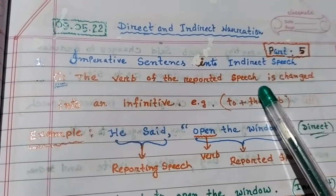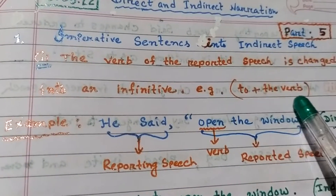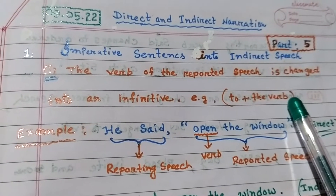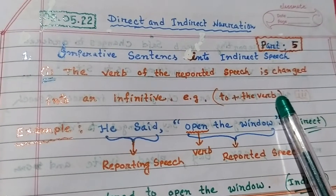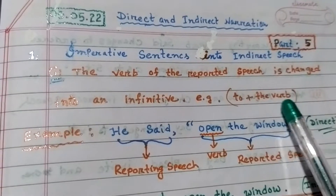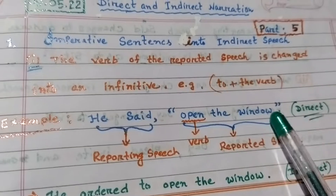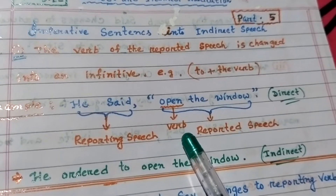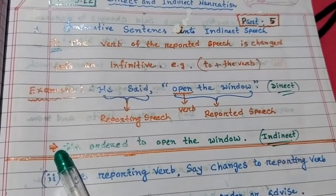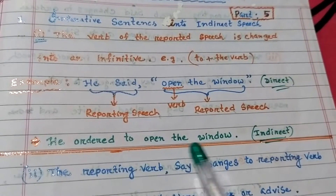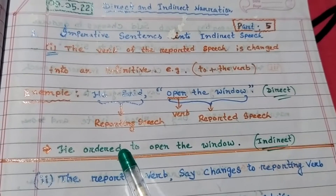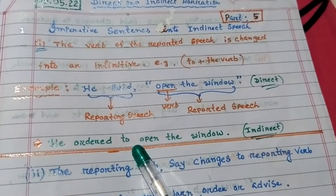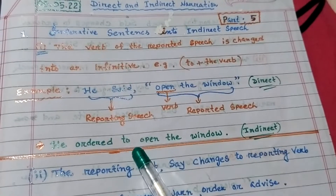Number one: the verb of the reported speech is changed into an infinitive, that is 'to' plus the verb. For example, in direct speech: 'He said, open the window.' Here 'open' is the verb. In indirect speech, this becomes: 'He ordered to open the window.' So 'ordered' is used and 'to' (the infinitive) is placed before the verb.